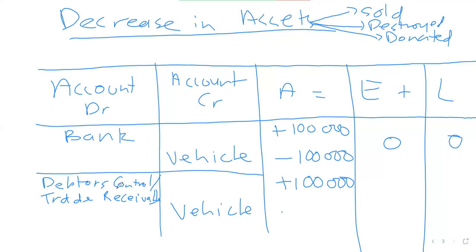Because vehicles are going out of the business, there's a negative effect of minus 100,000 on the asset column. Zero effect on the equity column, zero effect on the liability column. That's how you record it.